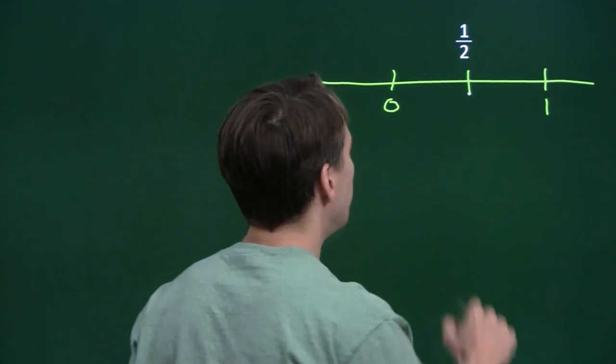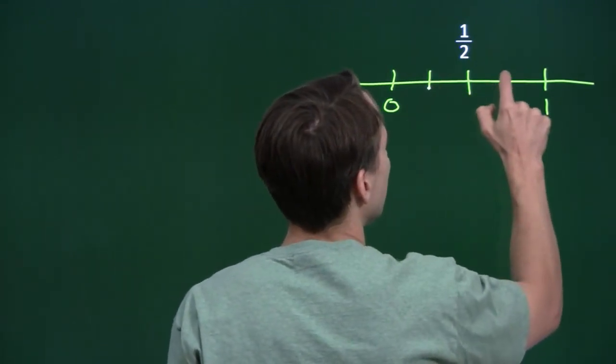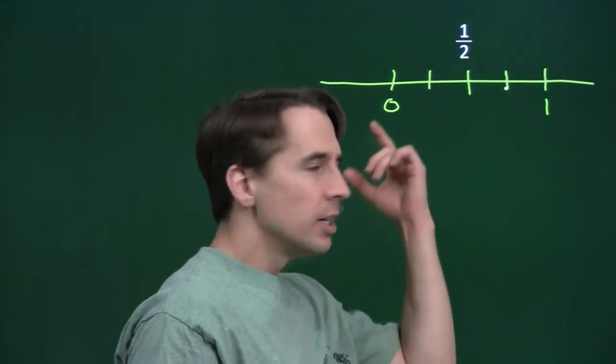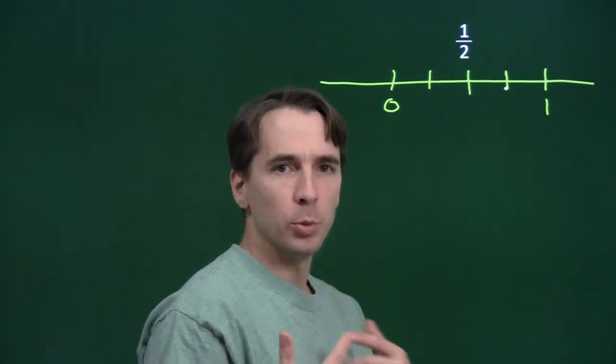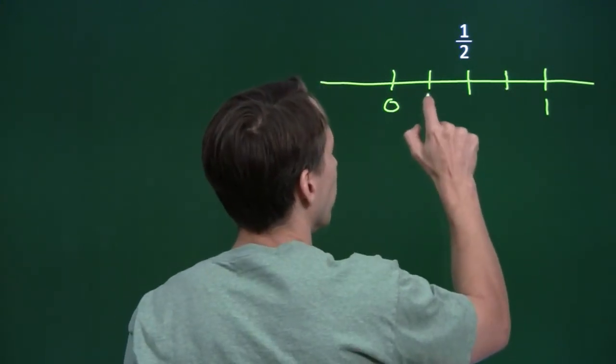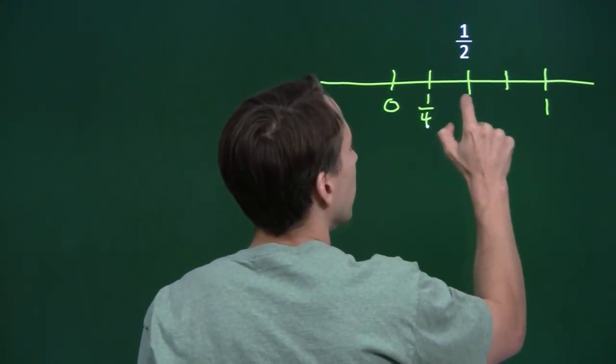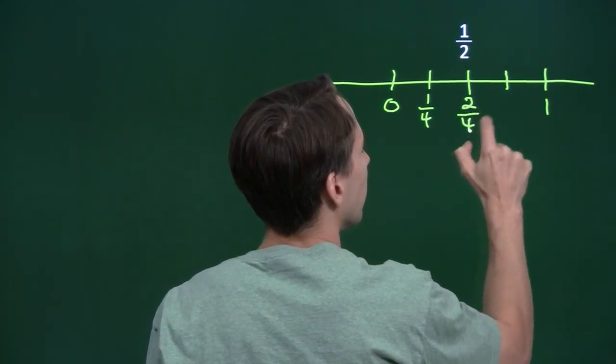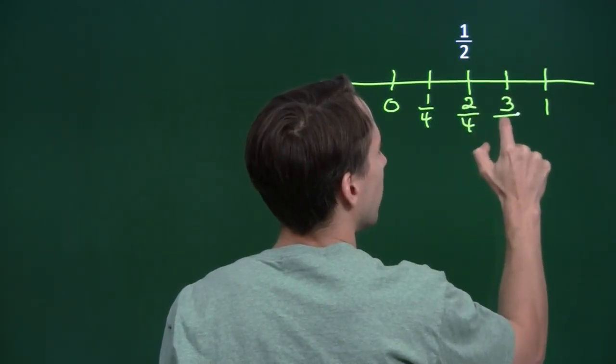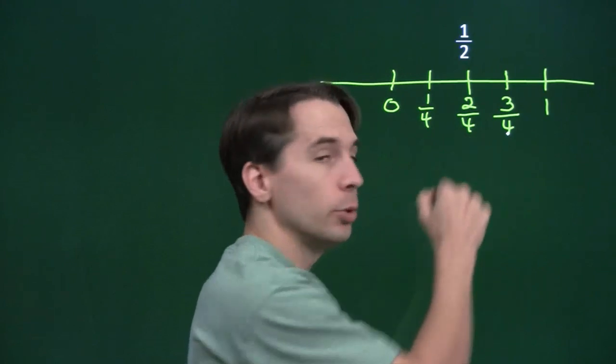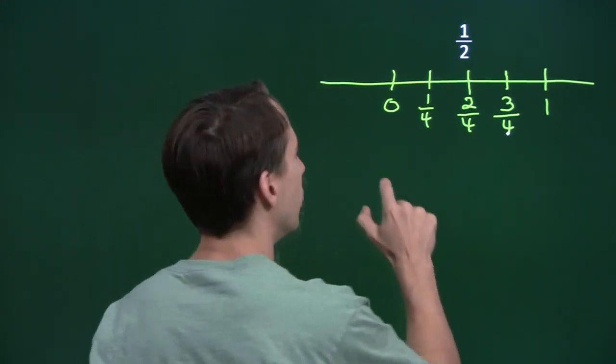Now what if we take each of these two pieces and break each one into two smaller pieces? Now, of course, I'm breaking the segment between 0 and 1 into quarters. This is 1 over 4. This is 2 over 4. This is 3 over 4. Sure enough, 1 over 2 and 2 over 4 end up at the same spot. So it looks like those two are equal.